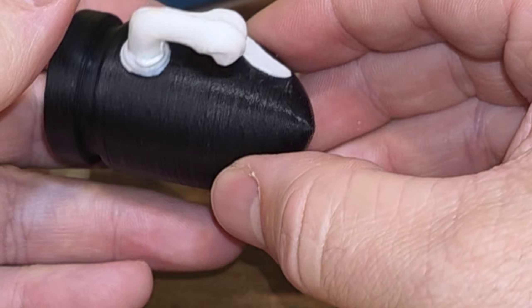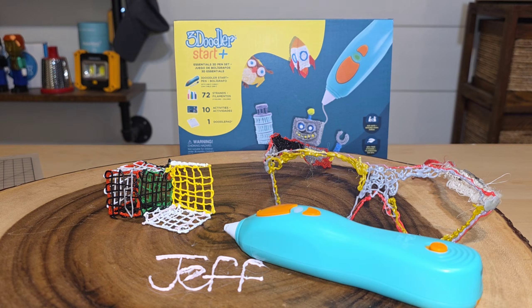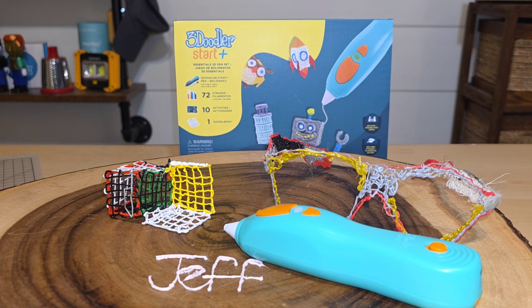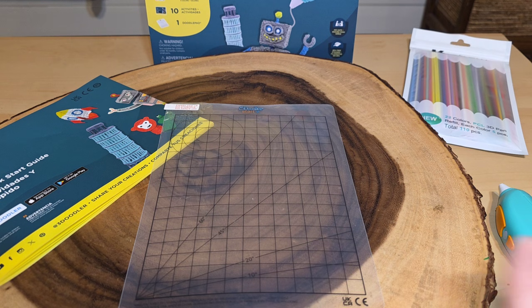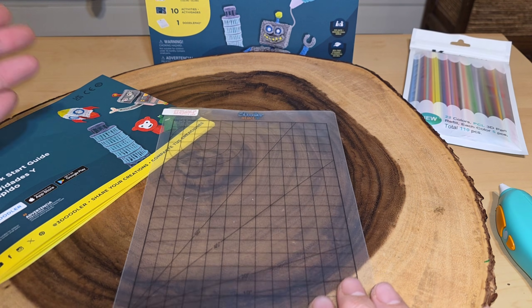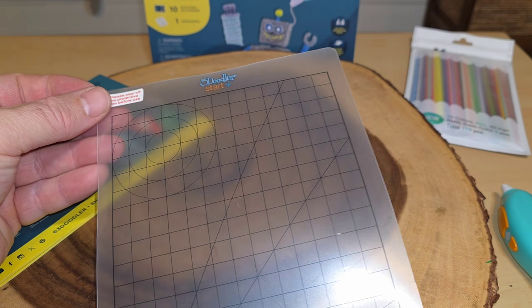So tell me, what are your thoughts of the 3Doodler Start Plus? Something you're looking into? Is there another 3D pen you'd recommend? Let me know down in the comment section below. I would love to hear from you. For most of this video I've just been free drawing, so to speak, but I do want to show you some of the things that come with the kit. Let's look at this doodle pad first and foremost.